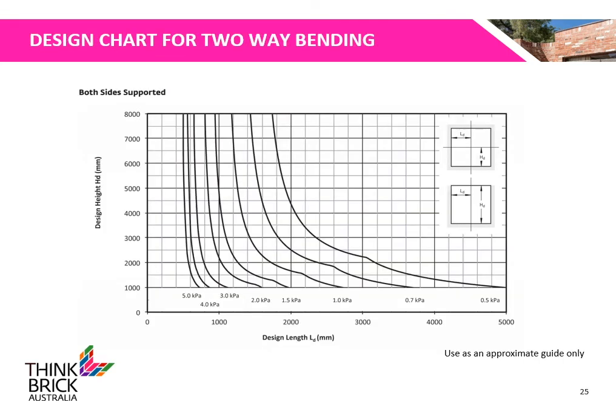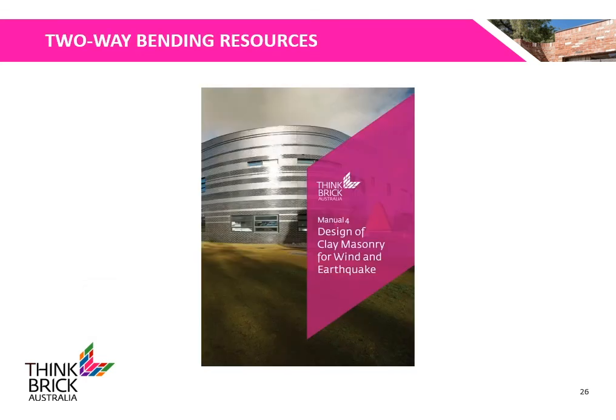Here is a design chart from our TBA 04 manual, which can be found on our TBA website. To read this graph, anything below the curve chosen is deemed okay for use. A 2.4m long wall using standard 110mm thick bricks is okay for a given design loading of 1.5 kPa. Note that the design height and length is half its actual value. The association has also created a design manual that provides information on the design requirements for two-way bending. It contains a lot of useful information on design and construction requirements.